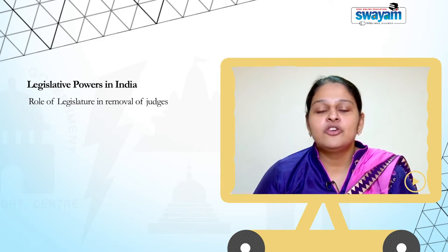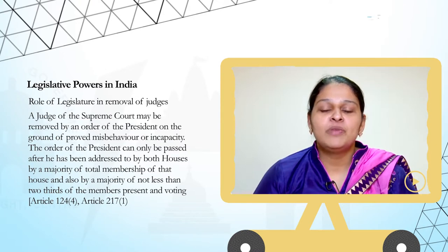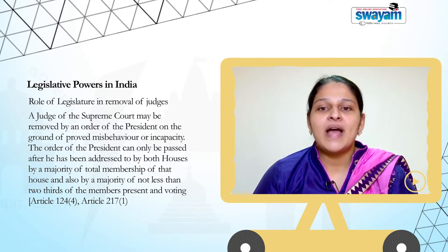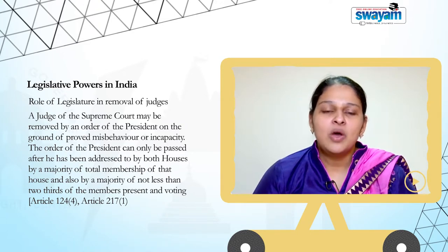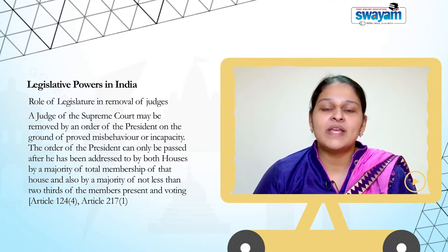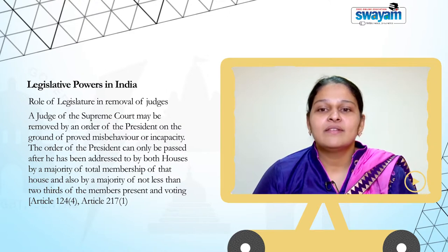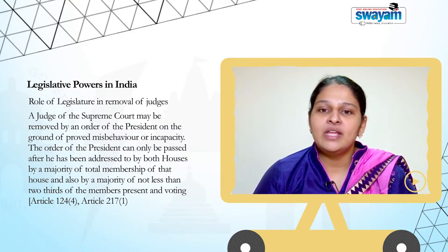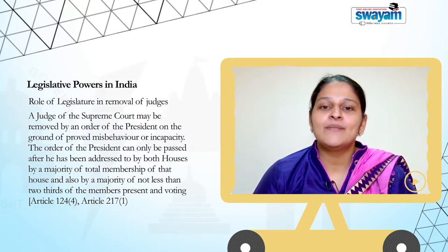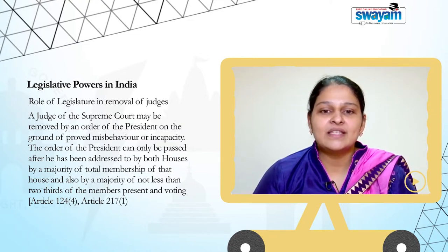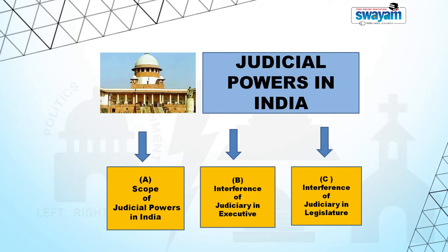Fourthly, the role of legislature in removal of judges. A judge of the Supreme Court may be removed by an order of the President on the ground of proved misbehaviour or incapacity. The order of the President can only be passed after he has been addressed to by both Houses by a majority of the total membership of that House and also by a majority of not less than two-thirds of the members present and voting.